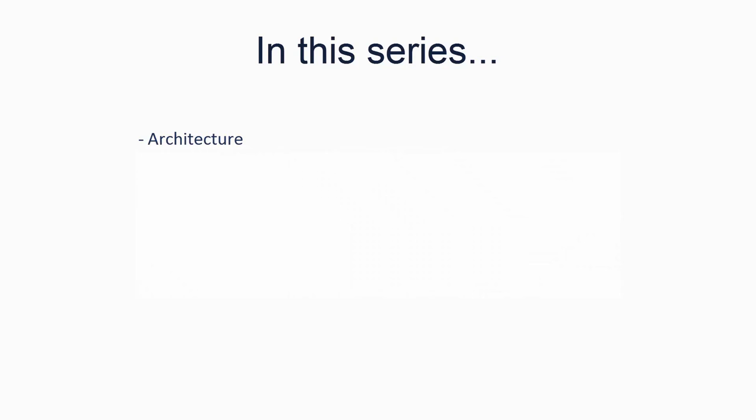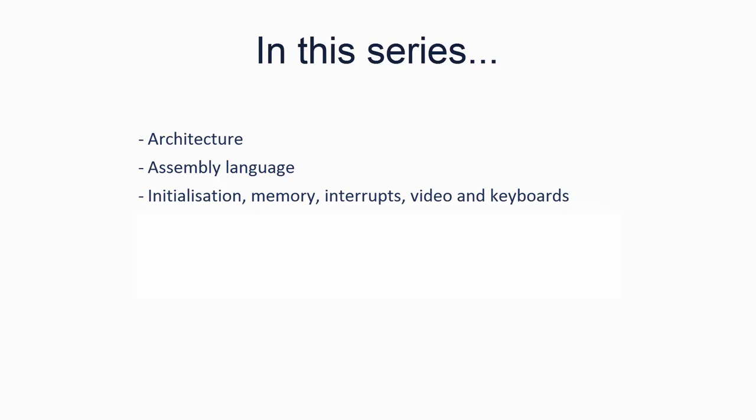So what will we be doing this series? We'll be covering all the basics required for operating system development, including basic computer and processor architecture, assembly language, processor initialization, memory, interrupts, video output, and keyboards, compiling and linking both C and C-sharp, our own basic operating system for PCs, and lastly, how to extend the OS using other Fling OS resources.